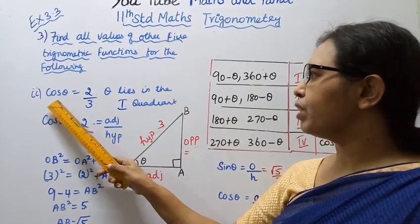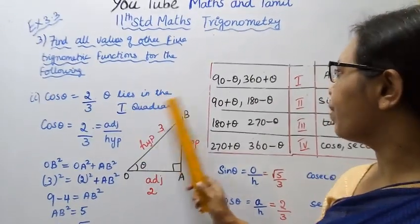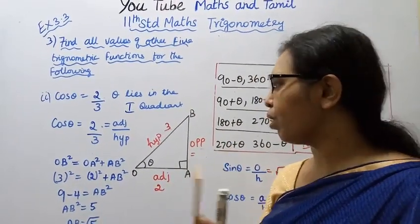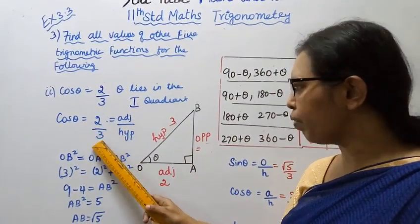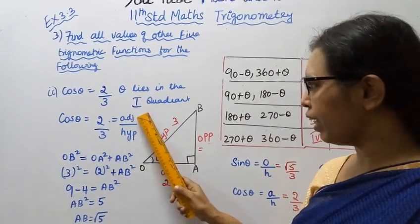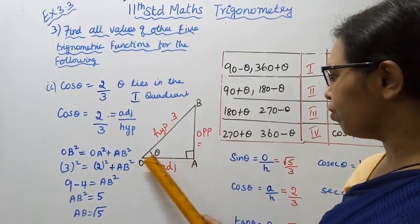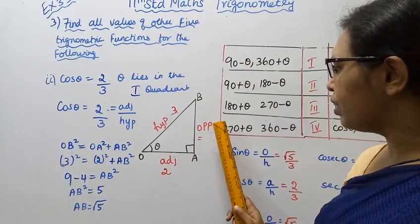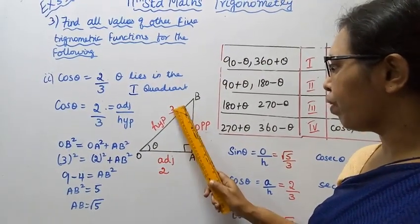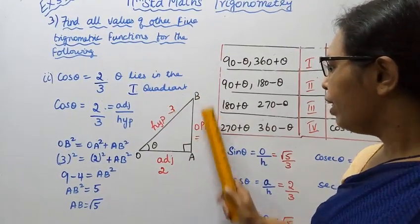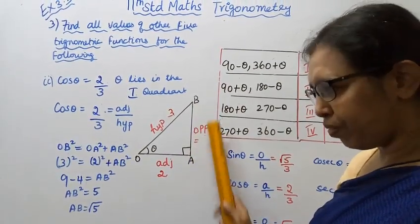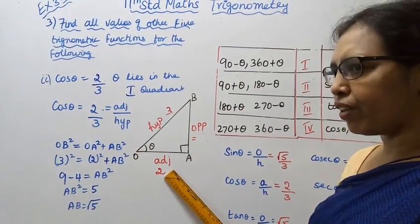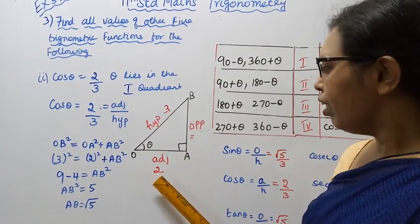Second sub-division: cos theta equals 2 by 3, theta lies in the first quadrant. In the first quadrant, all trigonometric values are positive. Cos theta equals 2 by 3 means adjacent by hypotenuse, so from the diagram, adjacent equals 2 and hypotenuse equals 3.